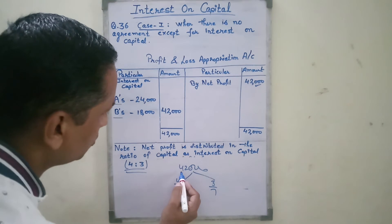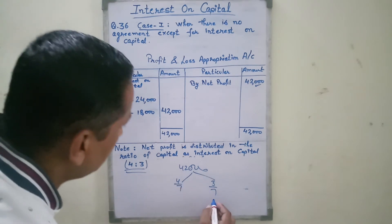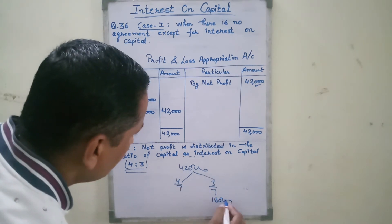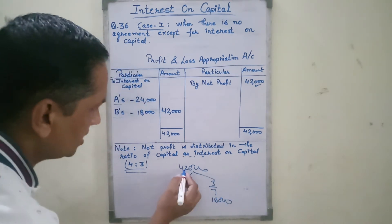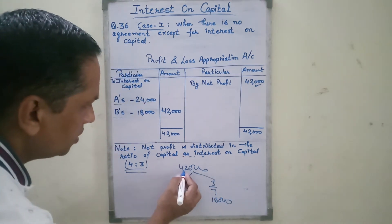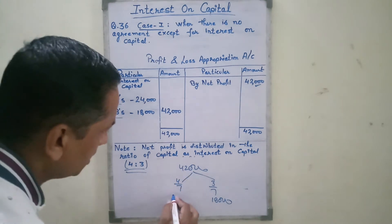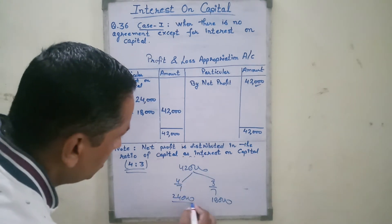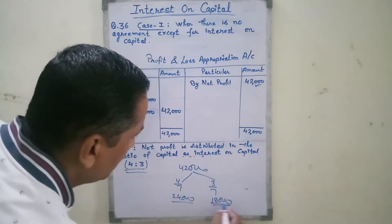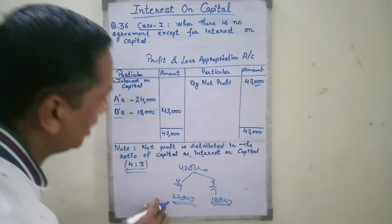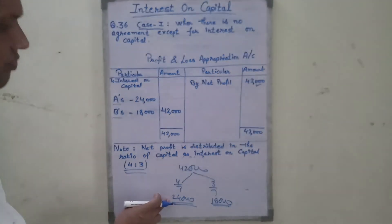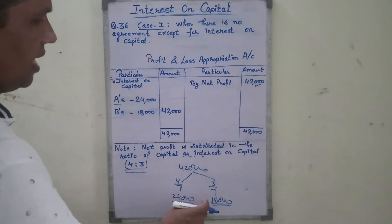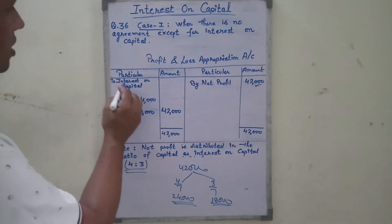Calculating: 6 times 7 is 42, so 4/7 of 42,000 gives 24,000 for A, and 3/7 of 42,000 gives 18,000 for B. Therefore, interest on capital is charged as 24,000 and 18,000 respectively.